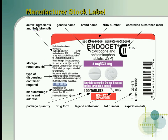For active ingredients and their strength, it tells us oxycodone hydrochloride 5 milligrams and acetaminophen 325 milligrams. Also worth noting is that the number in the barcode is the exact same number as the NDC number shown at the top of the label.